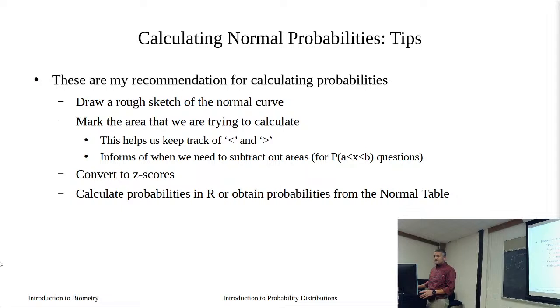If you ever do a pnorm problem and get a p-value greater than one, you did something wrong. Our probabilities are always going to be between zero and one.